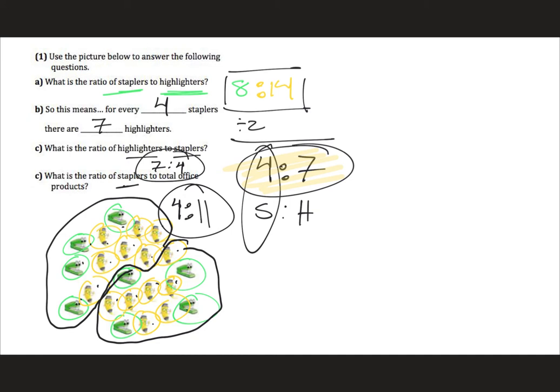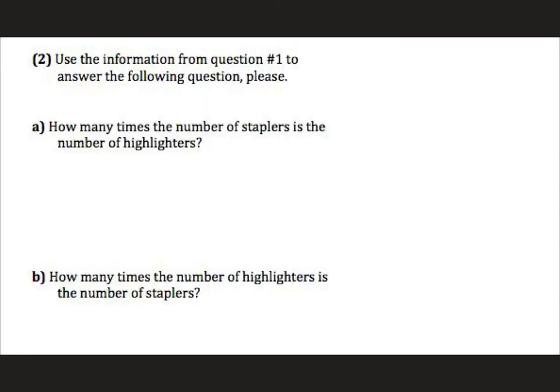Let's look at the next question. These ones sound a little tricky but we're gonna make it make sense. Staplers to highlighters was four to seven. How many times the number of staplers is the number of highlighters? First thing I'm going to do, we're going to translate this into an arithmetic statement. How many, I'm going to write a question mark, times, I'm gonna write multiplication, the number of staplers. Now in the ratio the number that went with staplers was four. Is, I'm gonna write an equal sign, the number of highlighters. The number that went with highlighters is seven.